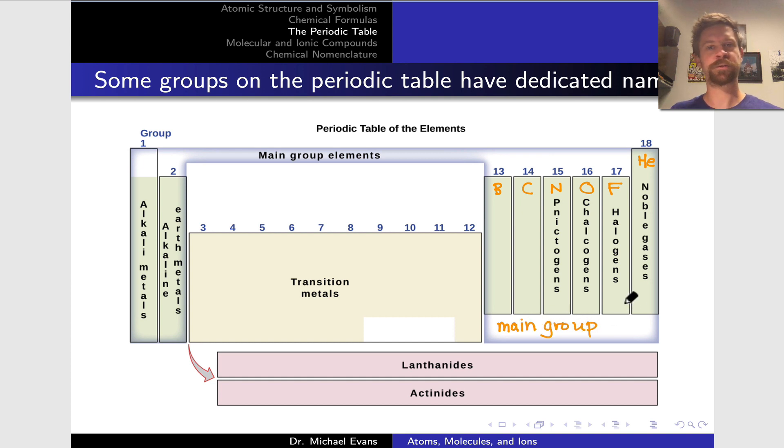Everything that you see here in green is called the main group. The main group elements really follow periodic trends in a robust way, a very robust way. We kind of set them apart from the other elements in the periodic table, which in some cases are exceptions to the periodic law.